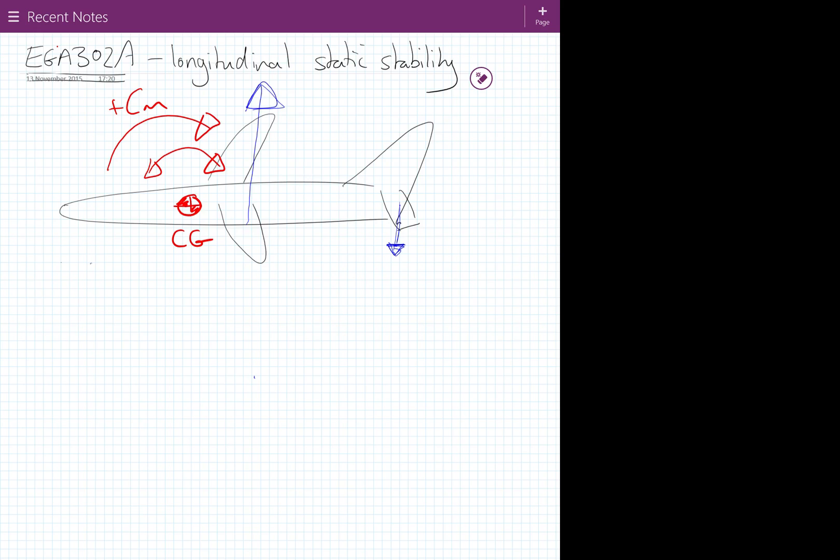So, if we're thinking about the longitudinal static stability of an aircraft, we're thinking about the motion of the aircraft in the pitching plane. So in this sense here, where the aircraft is going nose up, nose down about the centre of gravity.